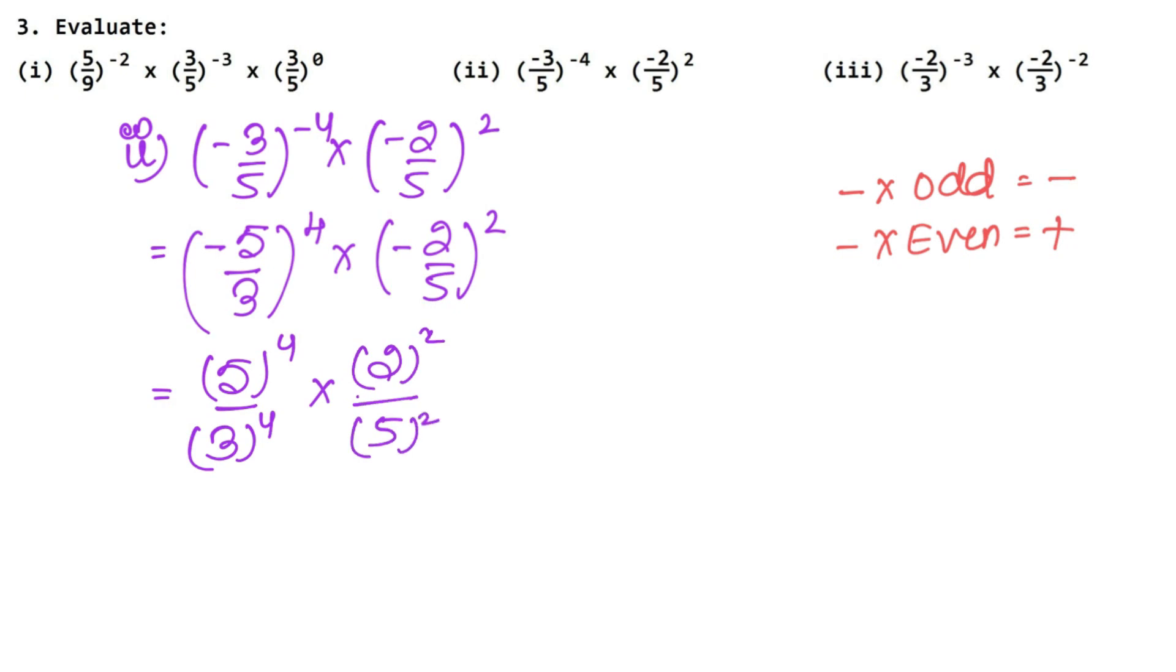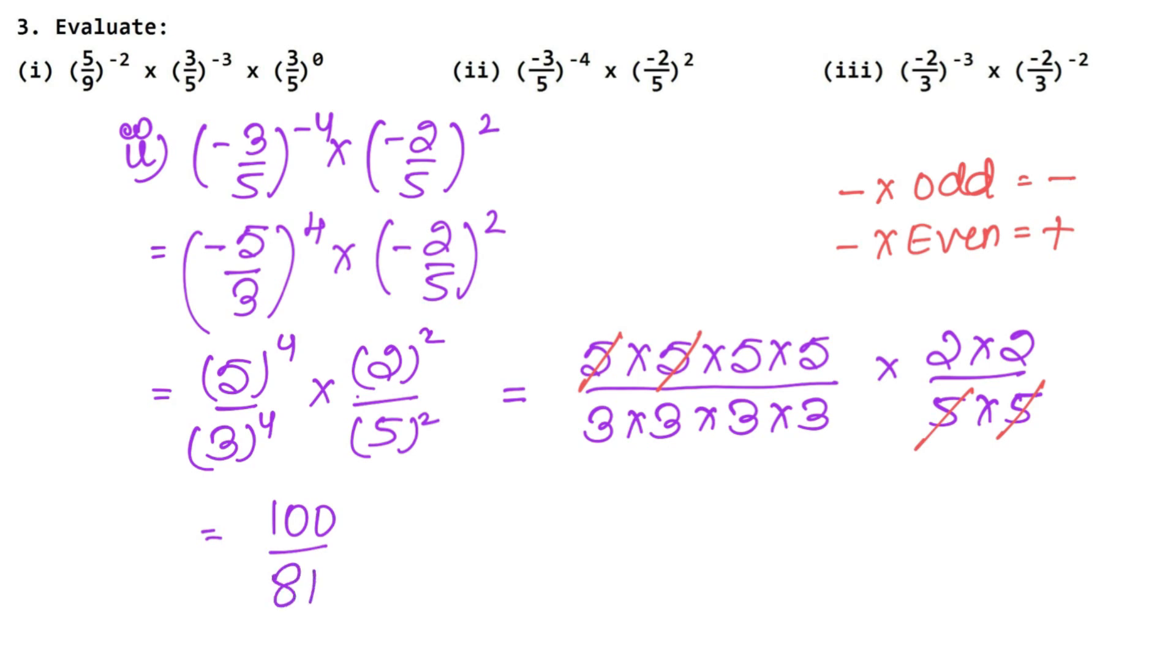Now what can you write? 5 power 4 and 3 power 4 into 2 power 2 upon 5 power 2. How will you do 5 power 4? So 4 times and 3, and 2 times and 5 also 2 times. Now cut the cut, 1, 5 and 2 cut. 5, 5 is 25, 25 is 50, 52 is 100. So 100 up and down, 3, 3 is 9, 9, 9, 3 is 81. So 100 upon 81 is the answer.